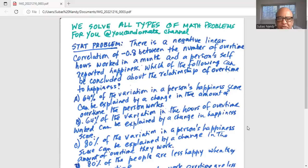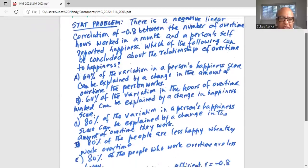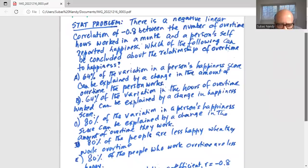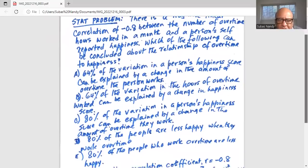Alternative B, 64% of the variation in hours of overtime worked can be explained by a change in the amount of overtime they work.